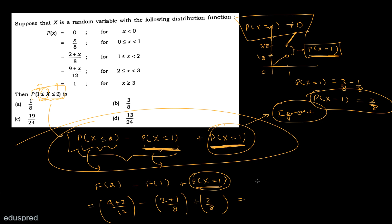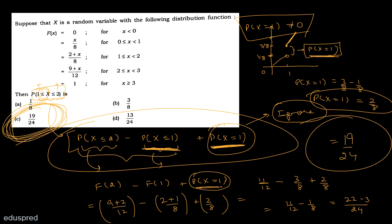इसको solve करते हैं: 11/12 minus 3/8 plus 2/8 = 11/12 minus 1/8। LCM लेंगे 24: यह हो जाएगा 22/24 minus 3/24 = 19/24। तो right answer है option C — 19/24, और option D नहीं। बहुत सारे students option D mark कर देते हैं क्योंकि वो x का type identify नहीं कर पाते। x एक mixed random variable है, equal-to sign की importance होगी, और P(x = 1) को अलग add करना पड़ेगा। That's it for this video.